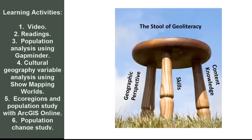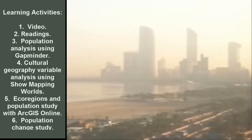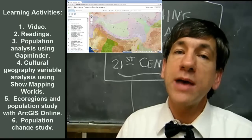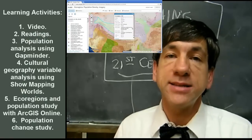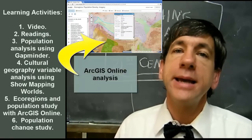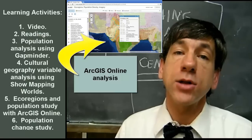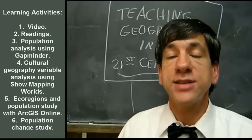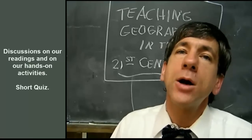Fourth, we're going to use something called Show Mapping Worlds, which allows us to create cartograms to understand global demographic variables. Fifth, we're going to do some hands-on investigation of ecoregions of the world and world demographic data using population density and choropleth maps. And number six, we're going to use ArcGIS Online to investigate changes in population in the USA by state, county, census tract, and block group.